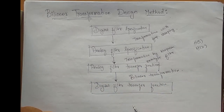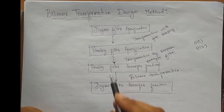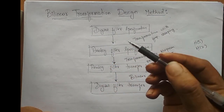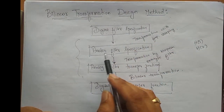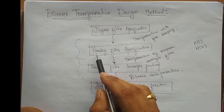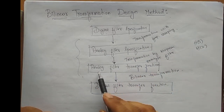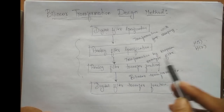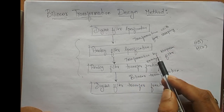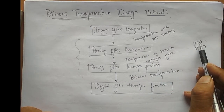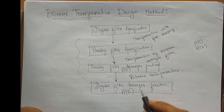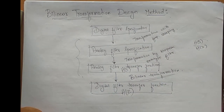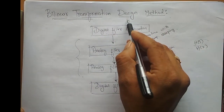To summarize the flow: I cannot design the digital filter directly from the digital filter specification, so I must follow intermediate steps. Given the digital filter specification, I get its equivalent analog filter specification using frequency warping. Then I obtain the analog filter transfer function H(S) using low-pass prototype filter transformation, and finally convert H(S) to H(Z) using bilinear transformation.